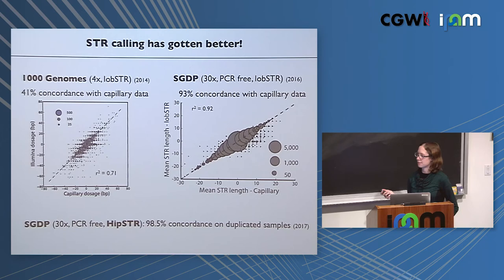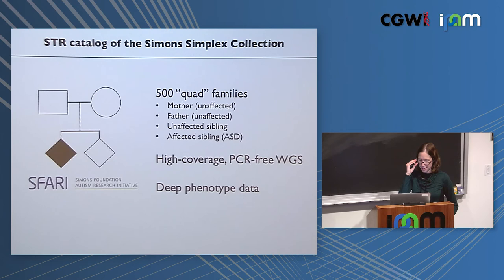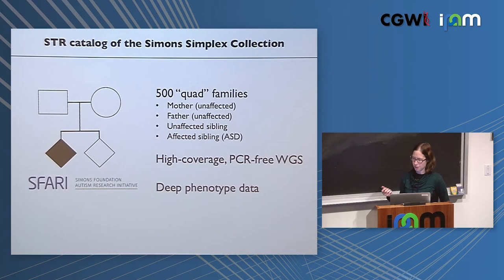The most recent dataset we've been profiling is from the Simons Simplex Collection, with 500 quad families. We're using it for imputation and to create a high-quality catalog of STR genotypes, focusing on unaffected individuals.